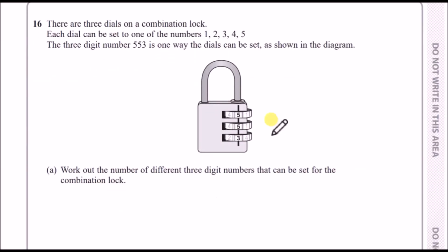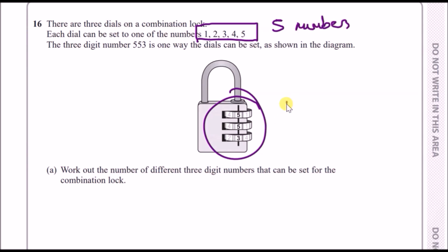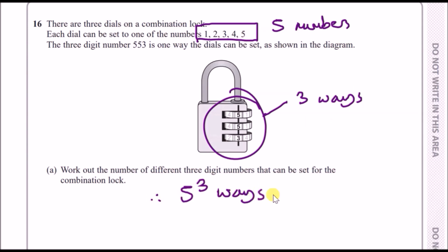Number sixteen: a combination lock has three dials, each set to one of 1, 2, 3, 4, or 5. To find the total number of different three-digit numbers, multiply the options for each dial: 5 × 5 × 5 = 125 different combinations.